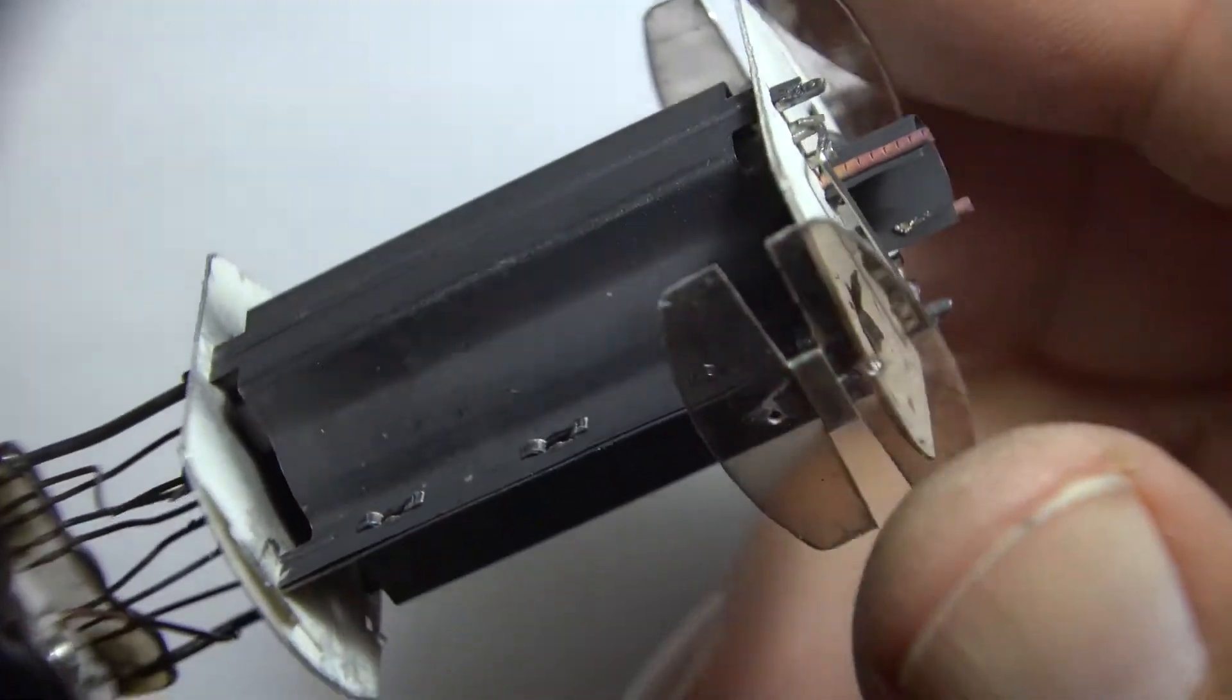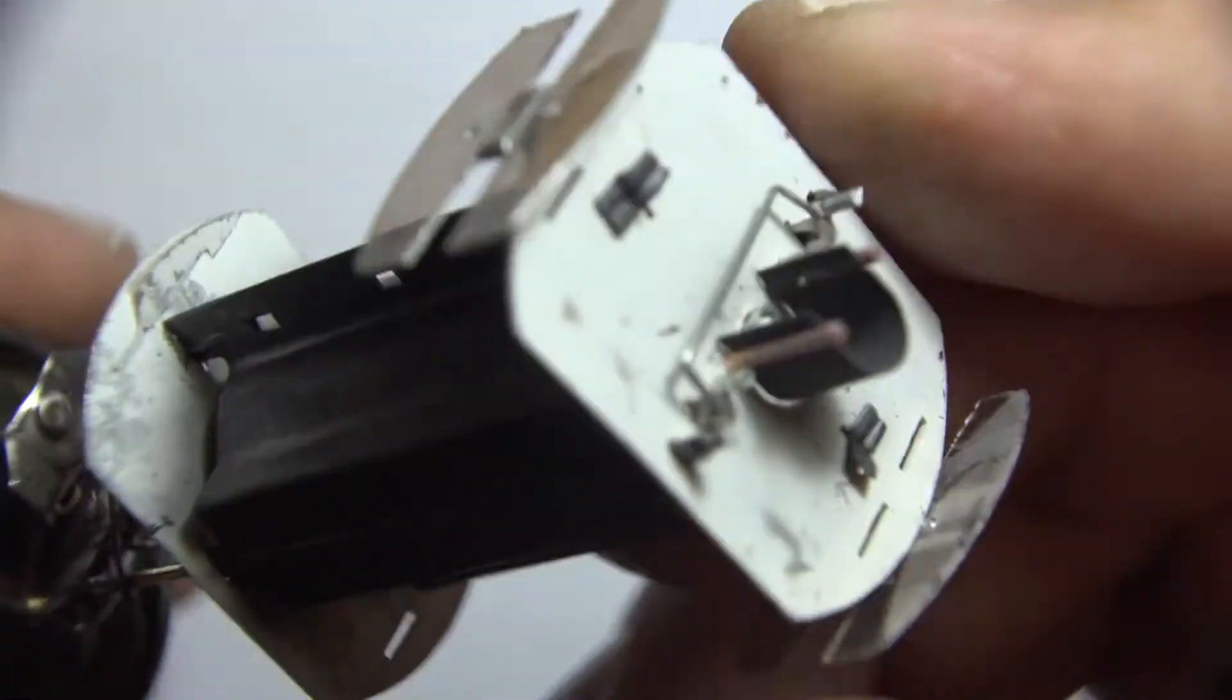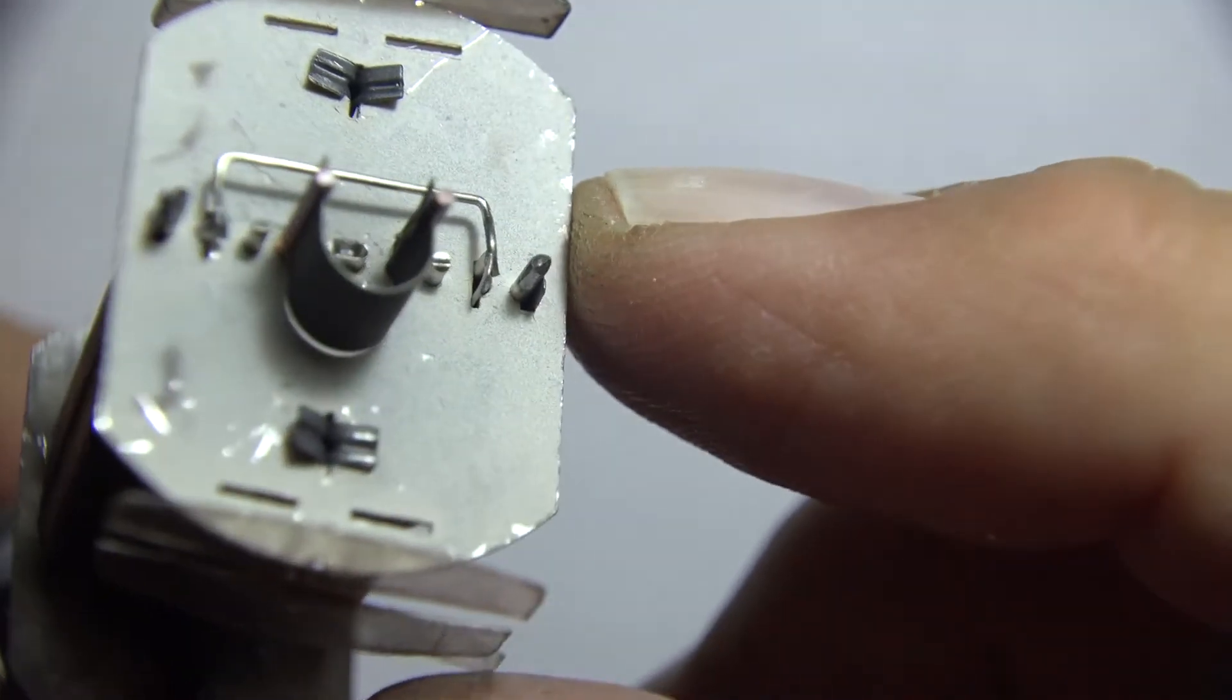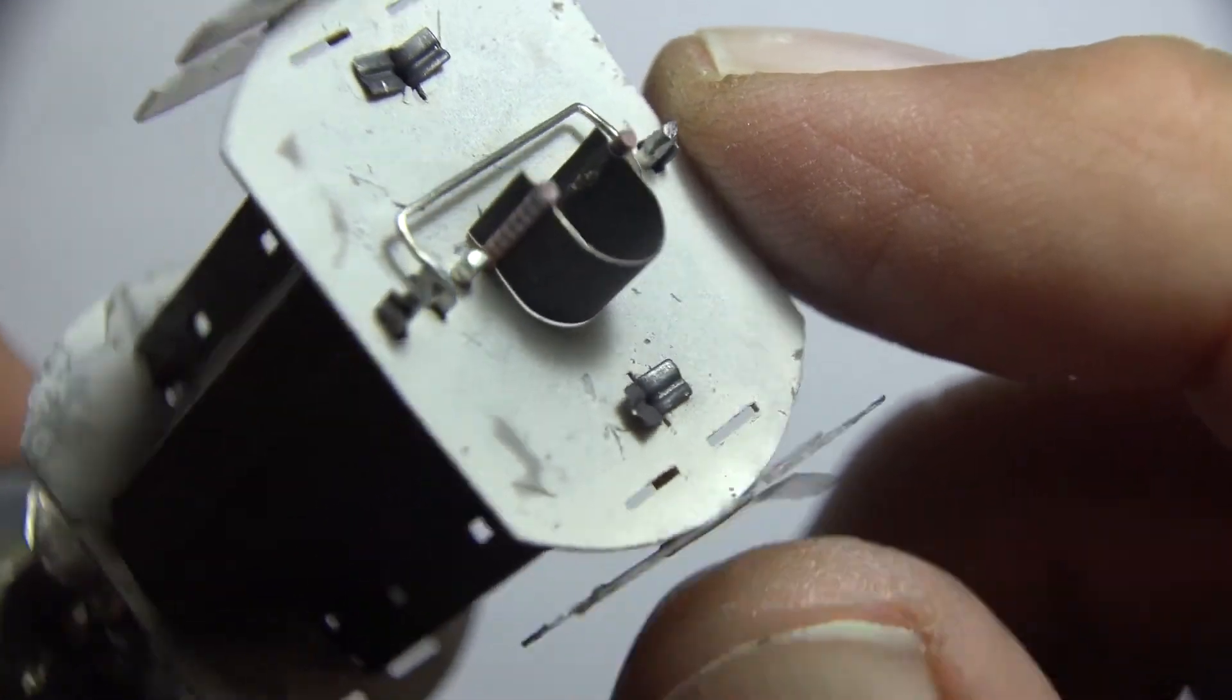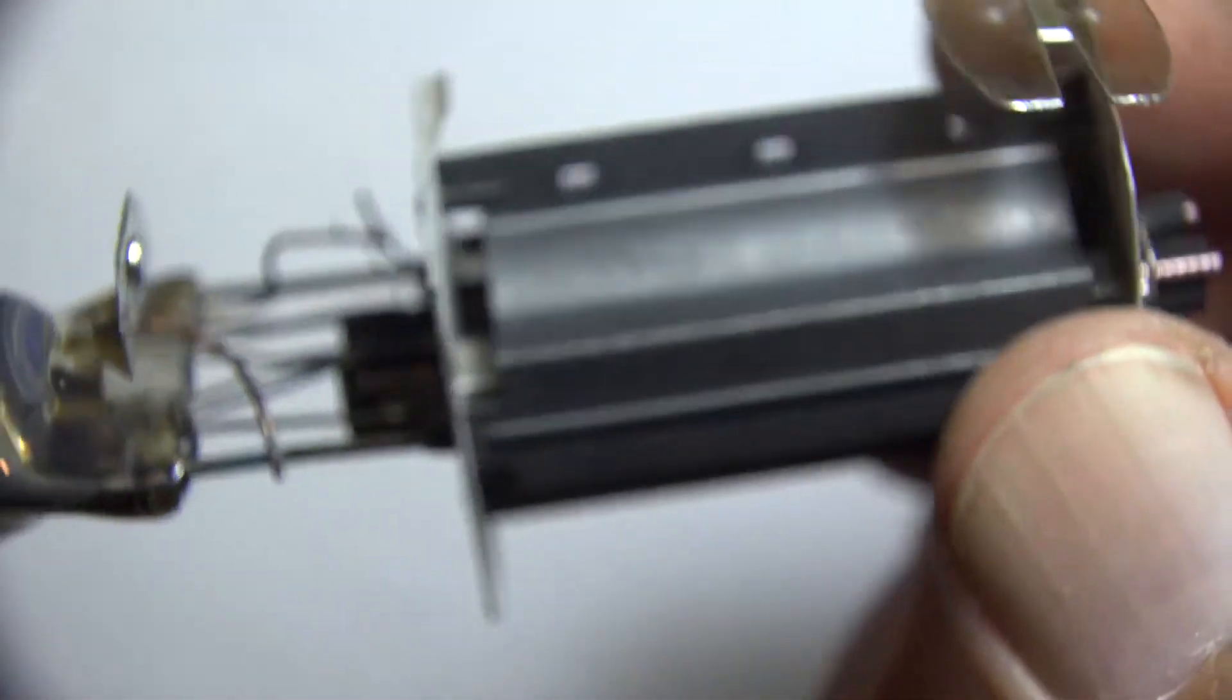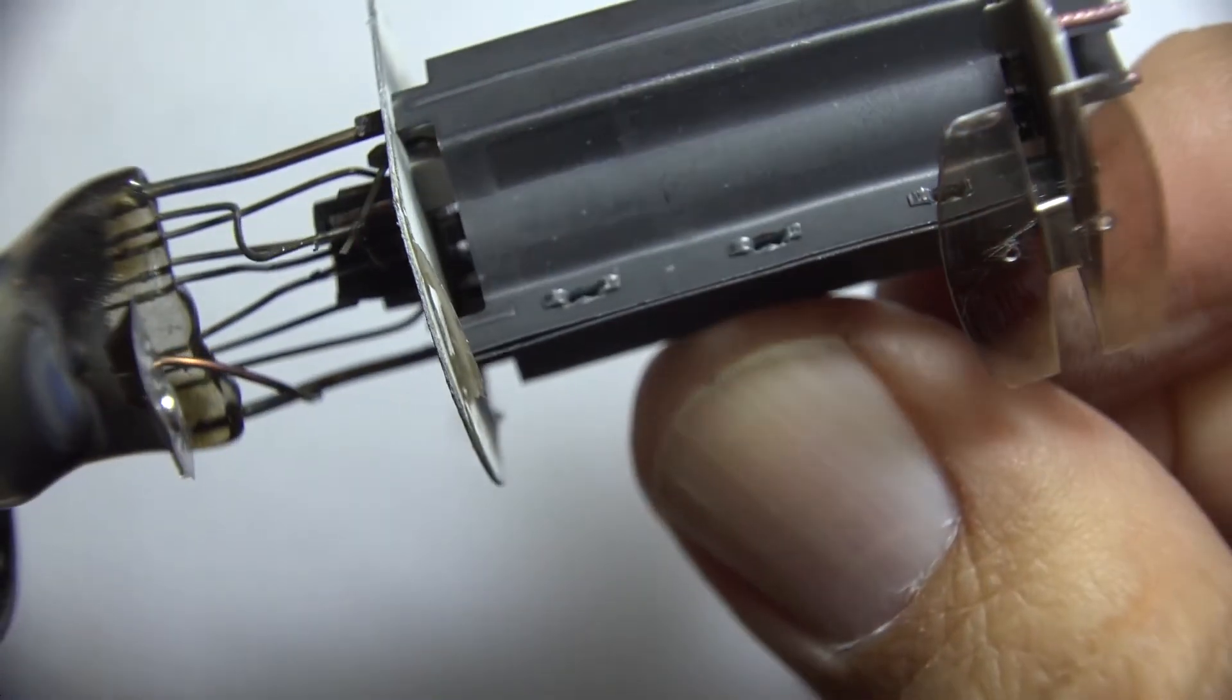These things up here are spacers that keep all the electrodes centered inside the glass tube. That U-shaped structure is a heat dissipator for the screen grid—there's one on the top and one on the bottom. This big thing here is the plate itself, and it's stapled together in six places.